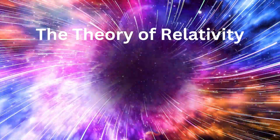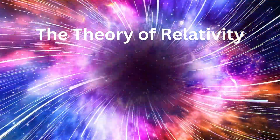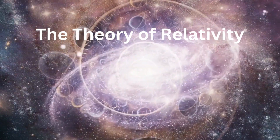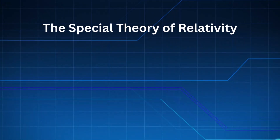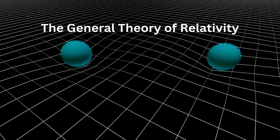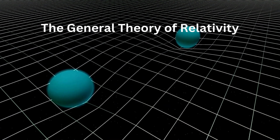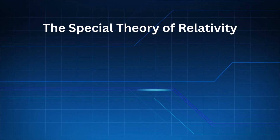The concept of the theory of relativity was to understand space, time and gravity. And there were two main parts to this: the special theory of relativity and the general theory of relativity. We'll look into both of those, but let's first take a look at the special theory of relativity.